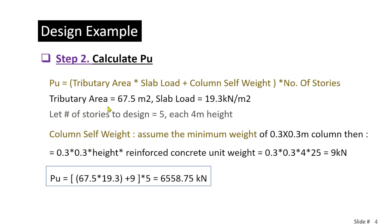Step 2 is to compute the ultimate axial load on the column. We find this by multiplying the tributary area by the slab load plus the column self-weight, multiplied by the number of stories. For this example we have 5 stories, each with a 4-meter column height. For the column self-weight, we assume an initial minimum dimension of 0.3 by 0.3 meters.